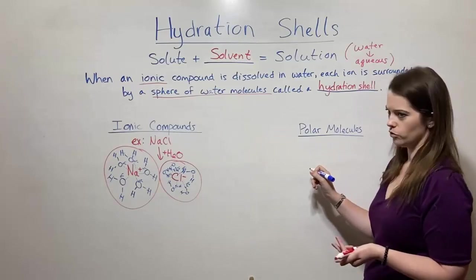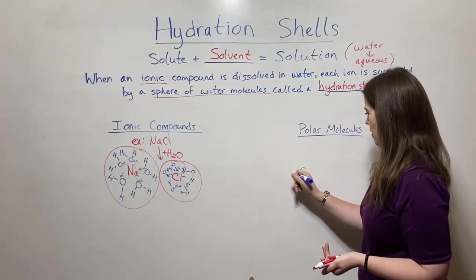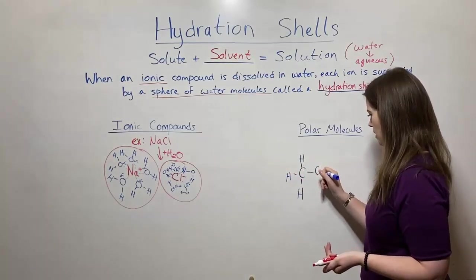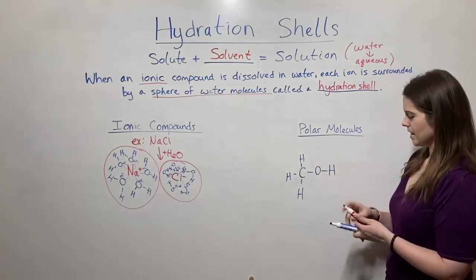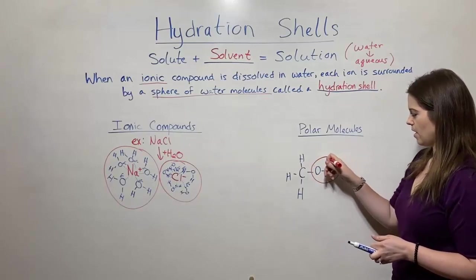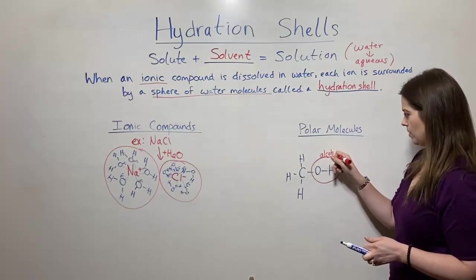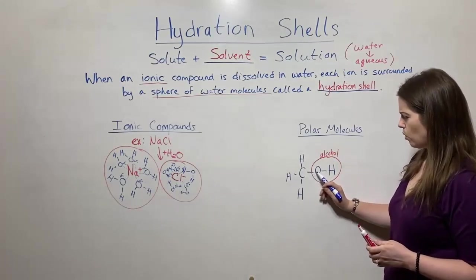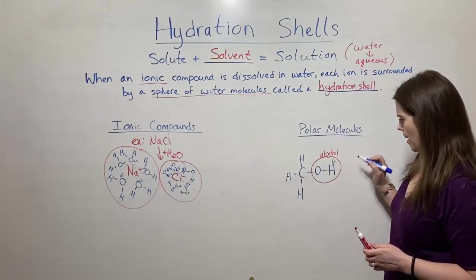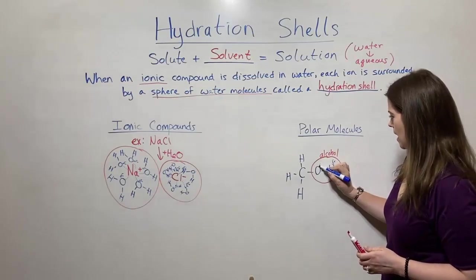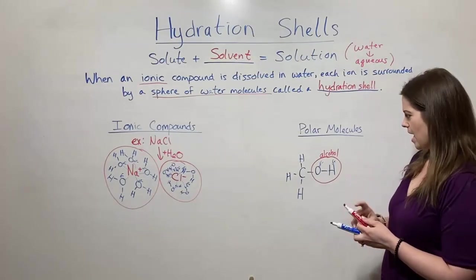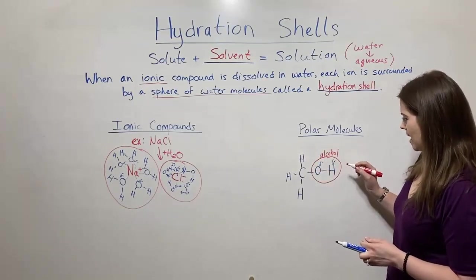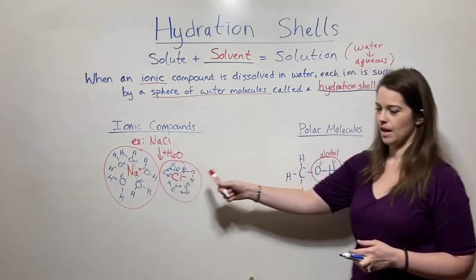An example of this would be something like an alcohol — for example, I'm going to draw methanol. Methanol looks like this: we've got a CH₃ attached to an oxygen attached to a hydrogen. It's this OH group right there that makes this an alcohol. Here we still have polar covalent bonds, with a partially positive hydrogen and a partially negative oxygen. So when you drop something like methanol into water, the water can form these same types of interactions.